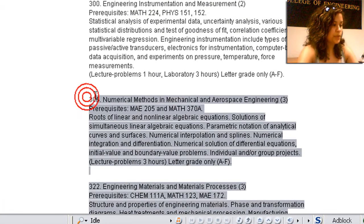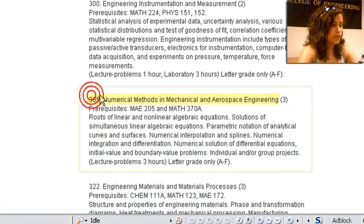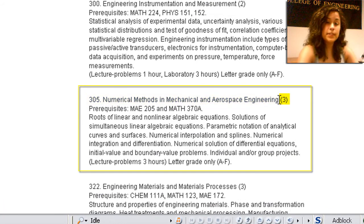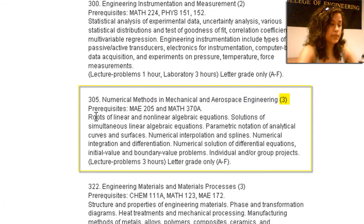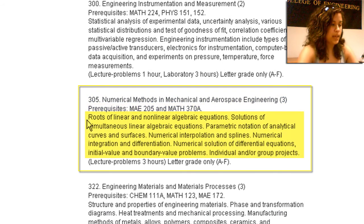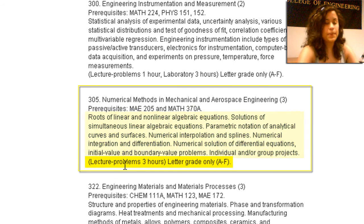So here we have the course number 305 and the course title, Numerical Methods in Mechanical and Aerospace Engineering. What's in parentheses is the number of units, and the prerequisites are listed here: MAE 205 and MATH 370A. Under that, a course description and the number of hours that you can expect to dedicate to that course.